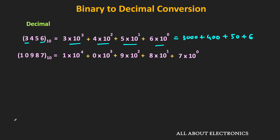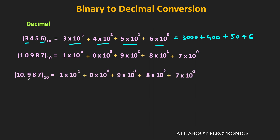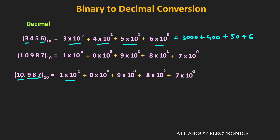If the number contains both an integer and a fractional part, then for the fractional part, as we move towards the right from the decimal point, the weight of each digit reduces by a factor of 10. Before the decimal point, for the integer part, as we move towards the left, the weight increases by a factor of 10. The actual value is the summation of all these products. In the decimal number system, the base is 10, so the weight of each digit is a power of 10.